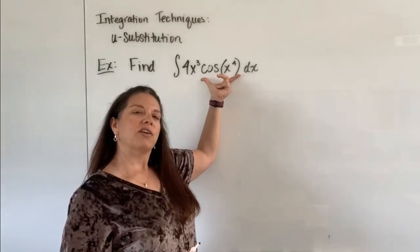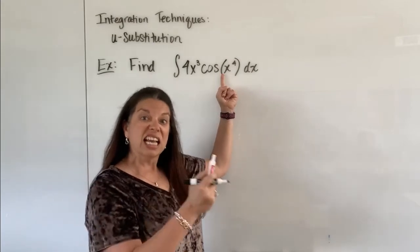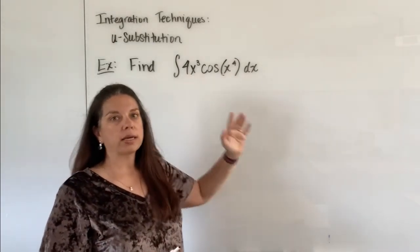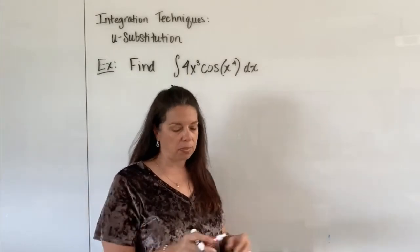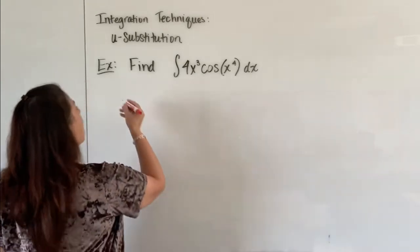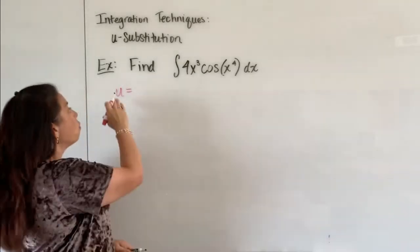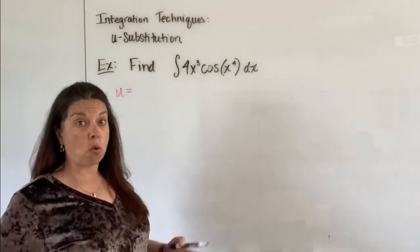If I look very closely, if x⁴ is the inside function, its derivative is 4x³. That's really advantageous for us to recognize from the beginning. If I recognize that, then that will help me figure out what I would like to use as the defining thing for u.